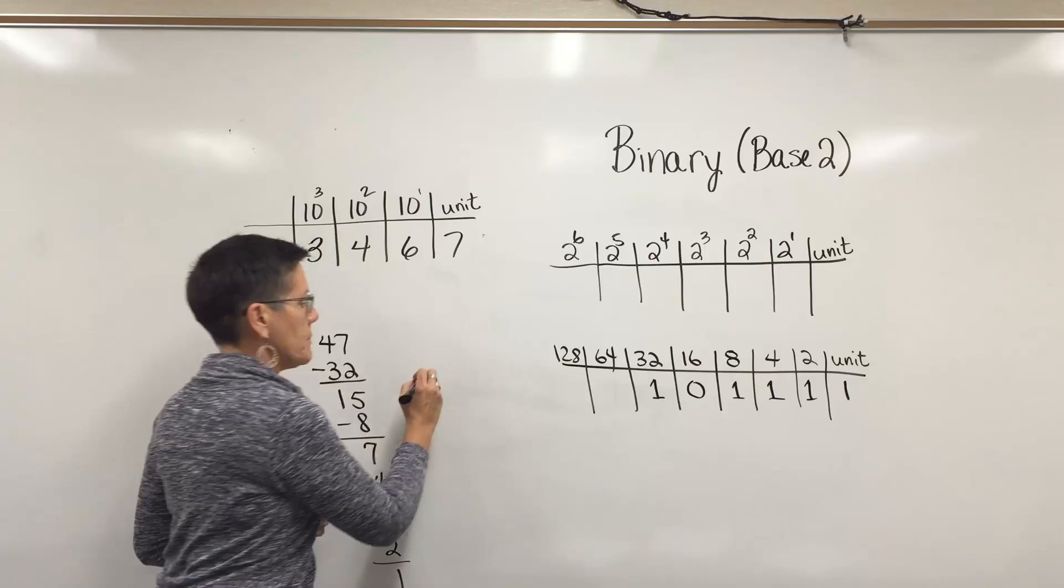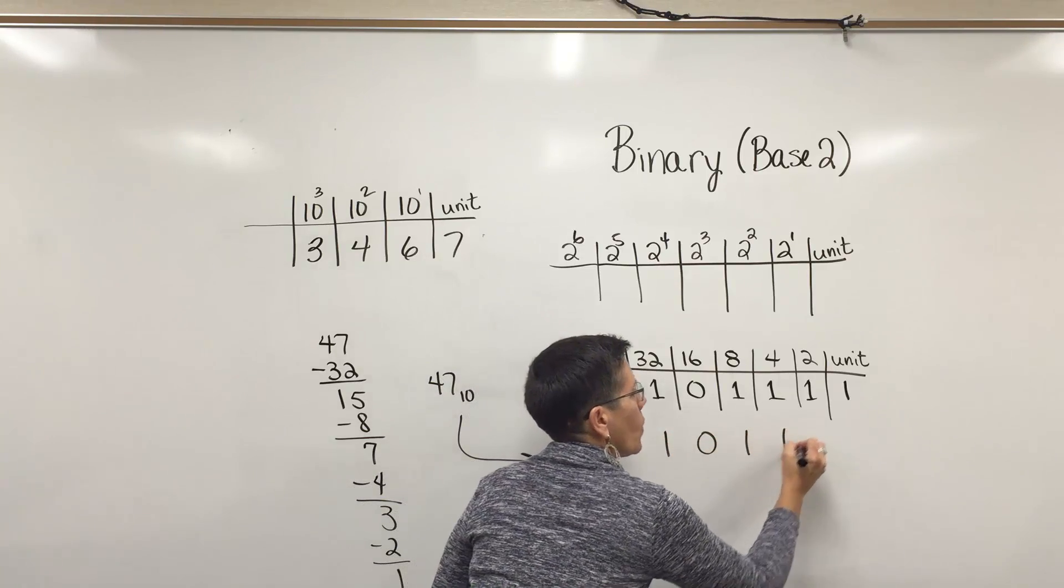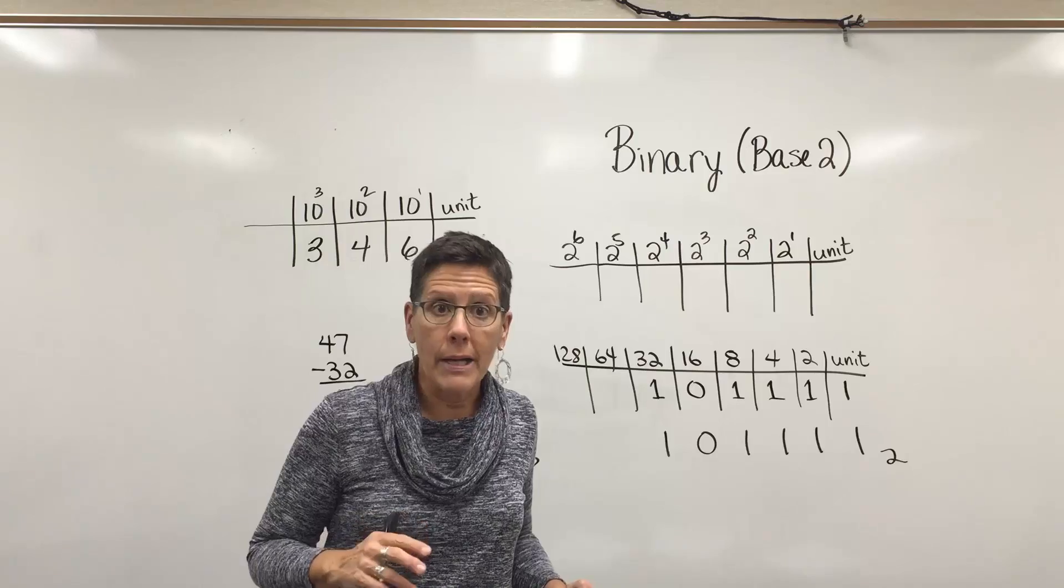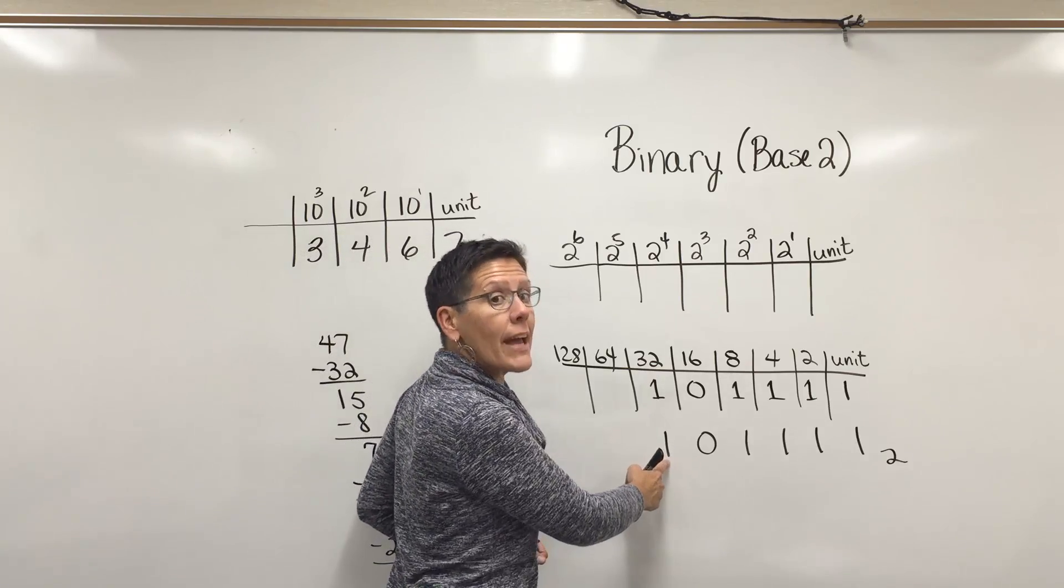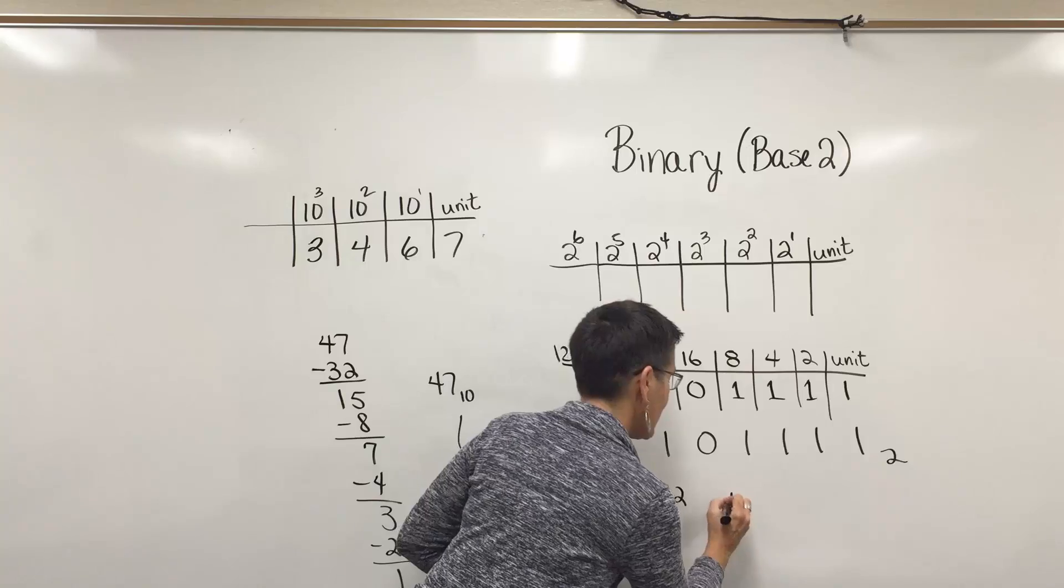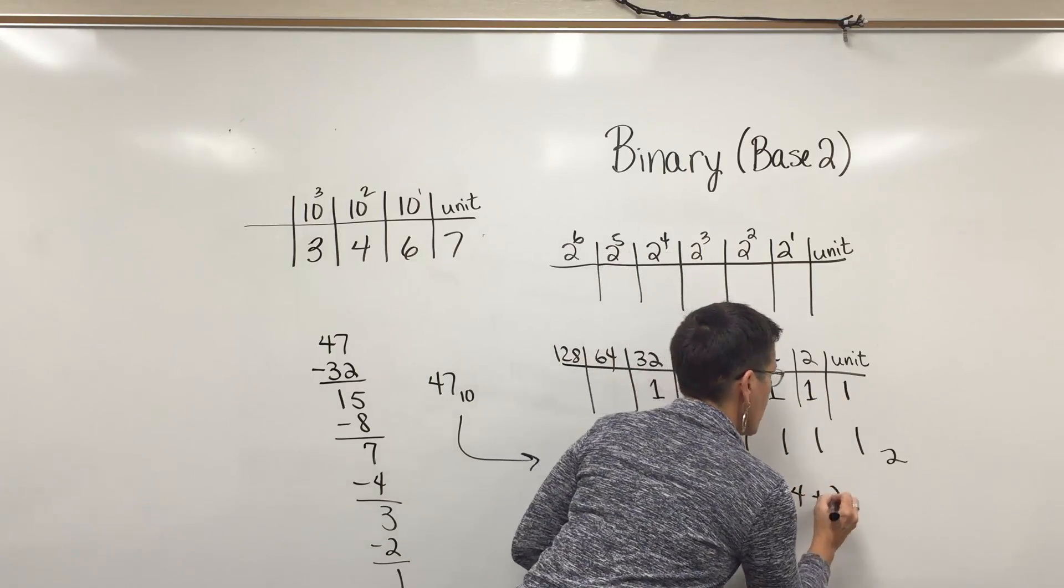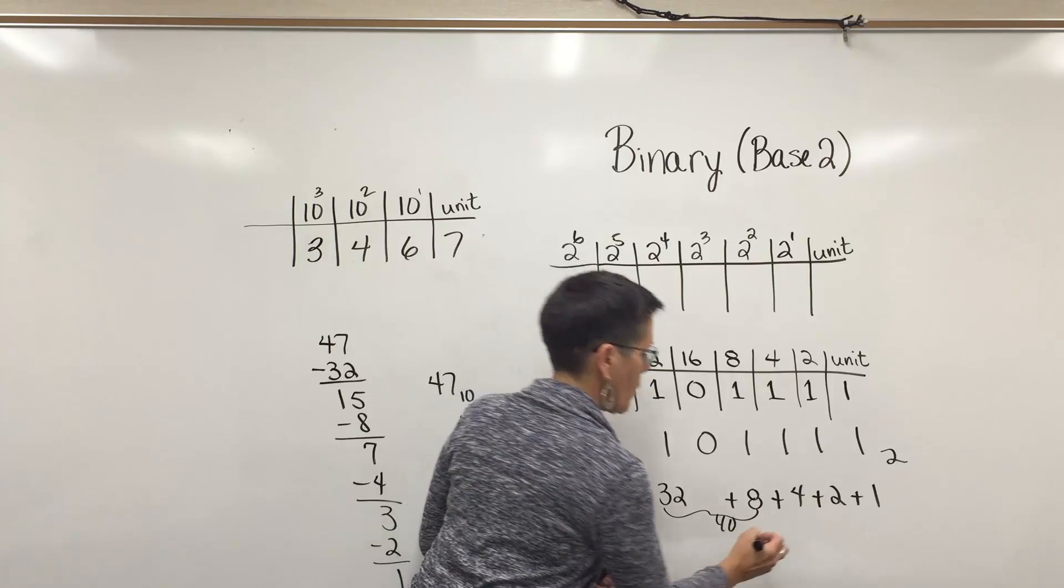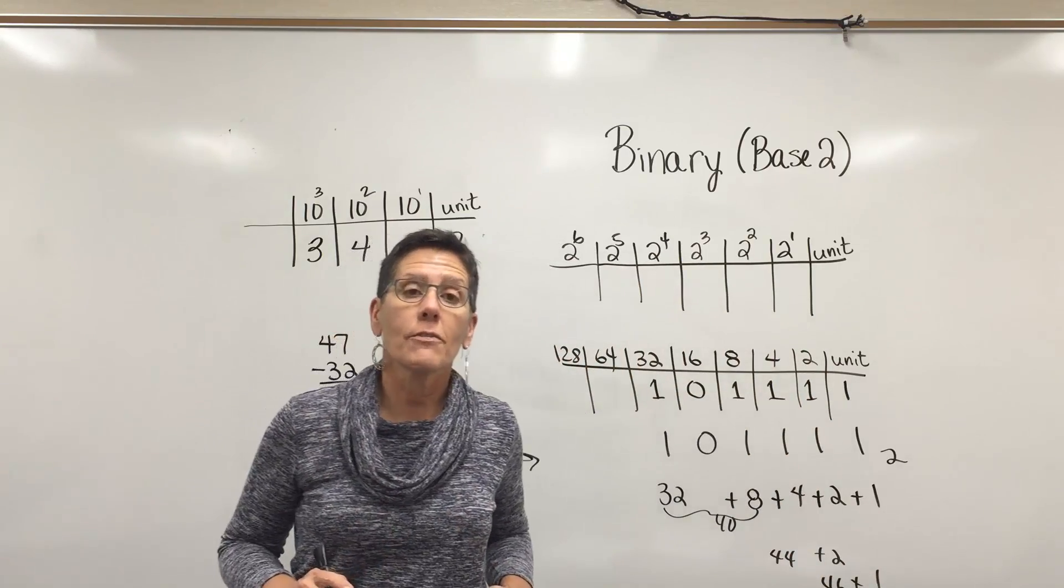The number 47 in our base 10 world is the same thing as the number 101111 binary. I'll show that subscript so the reader knows that's a number in binary notation and I should only be using zeros and ones. To check my answer, I could go back and say that one means I have a 32, this one means I have an eight, here I have a four, here's a two, and this one represents a unit. If you add all that up, here's 40 plus four is 44 plus two is 46 plus one is 47.